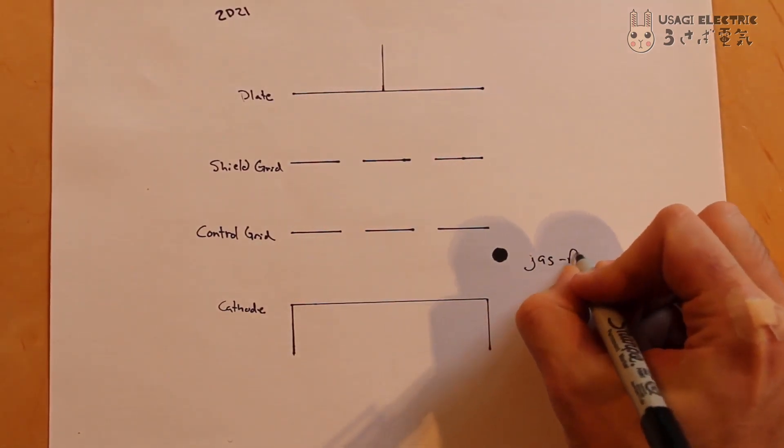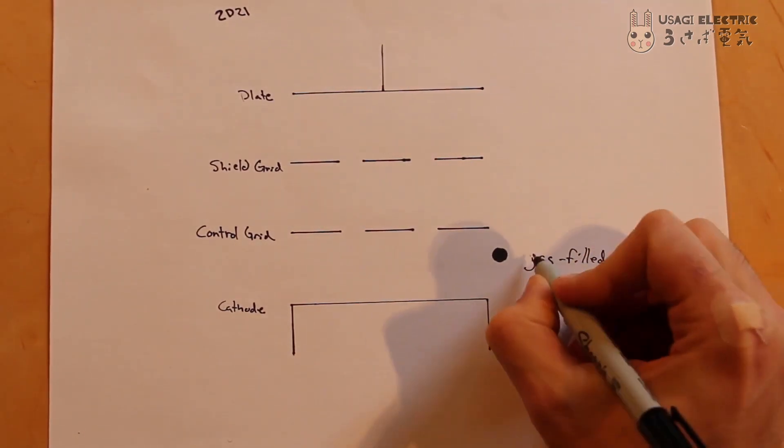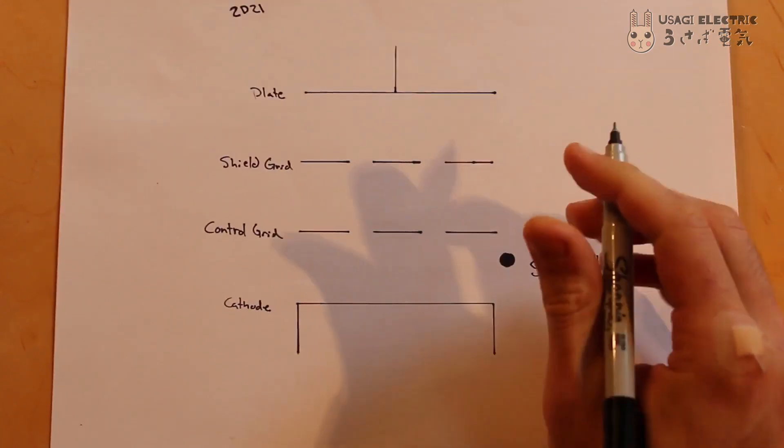Thyrotrons resemble standard vacuum tubes, but instead of the inside being at a vacuum, it is filled with a gas, such as argon or mercury vapor.